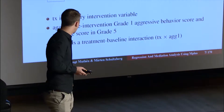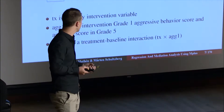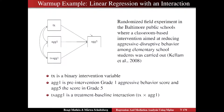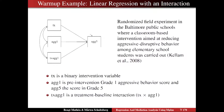We're going to start with this example, and we're actually going to look at this example several times today. It's an example of a randomized field experiment in Baltimore, specifically elementary schools in Baltimore, where they have an intervention trying to reduce the aggressive disruptive behavior of students. In this example, we have a treatment variable, which is an intervention to try to reduce the aggressive disruptive behavior.